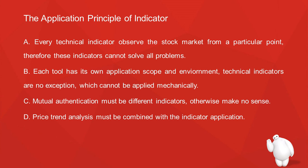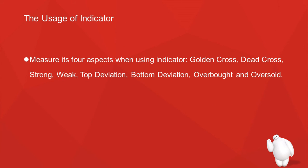Price-volume analysis must be combined with indicator application. The key usages of indicators are: golden cross, dead cross, strong area, weak area, top deviation, bottom deviation, overbought, and oversold. When using any indicator, you can judge the golden cross, dead cross, strong or weak areas, and these conditions.